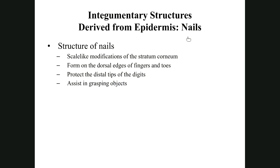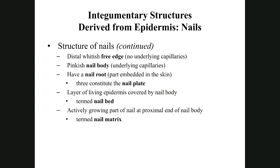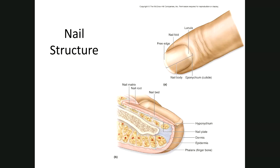Nails are simply compacted keratin — super compacted, just like skin and hair. They cover the tips of fingers and toes, help protect them, and help grab objects when we squeeze. The free edge of the nail is what you clip with fingernail clippers. There's also the white lunula, which can be used for diagnosis. Nail coloration and shape can tell us a lot about the physical health of a person — nails are another health indicator.